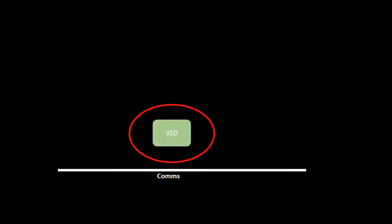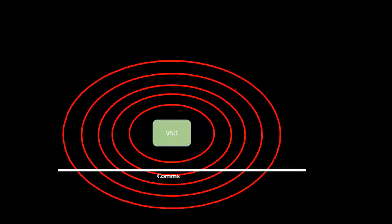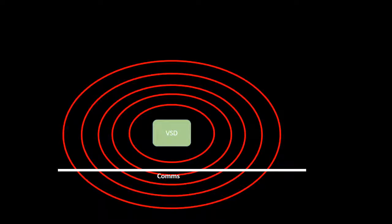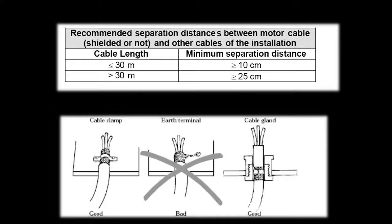Due to the large amplitude, high frequency output of a VSD, they are a major source of electromagnetic interference. This can disrupt nearby communication signals. For this reason, VSD cables must be properly shielded and separated from other cables.